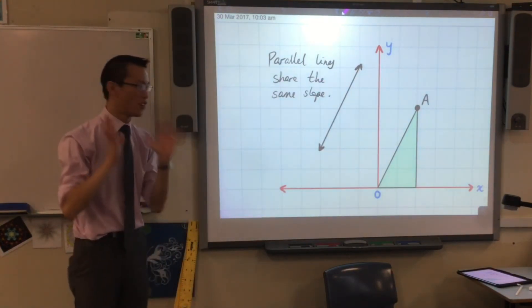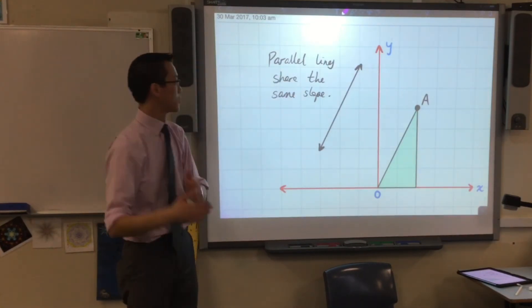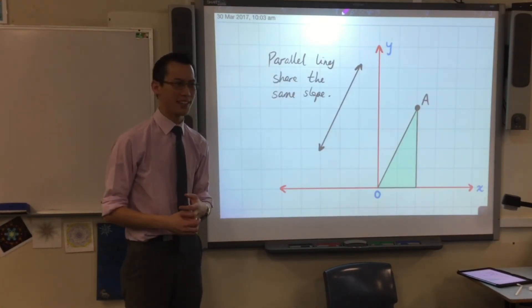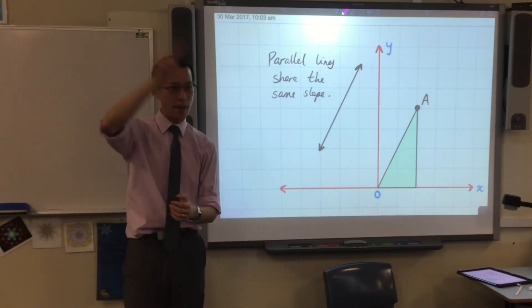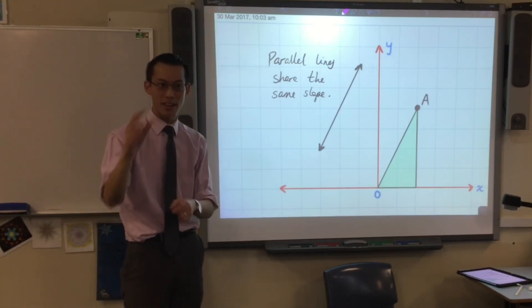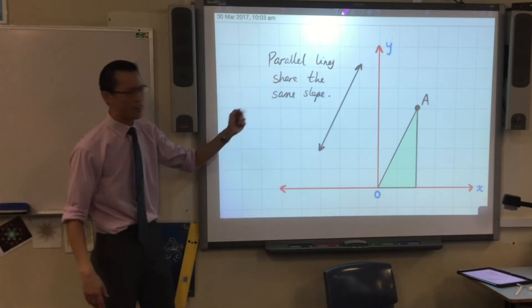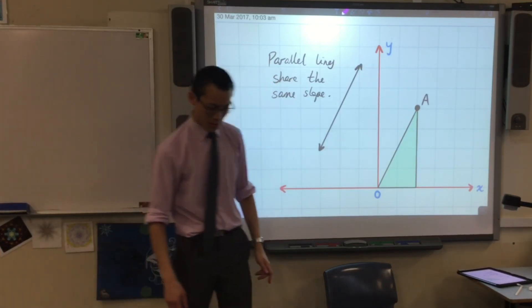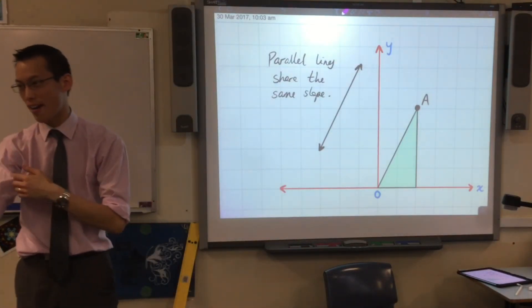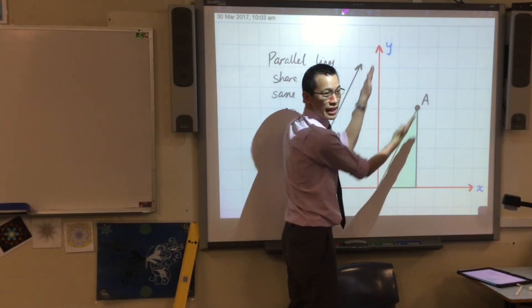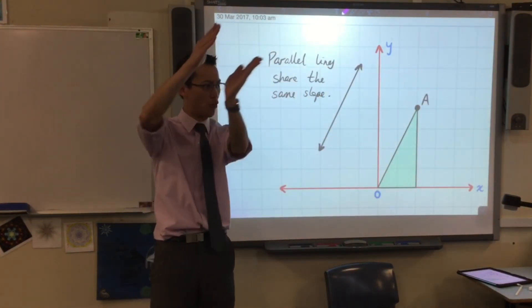By the way, the word para, it means alongside. So paranormal activity, it's like, it's not quite normal. It's sort of a bit over here. Parabolas, you know those shapes? It means throwing something aside, which is the shape you get when you throw something away. The word itself, parallel, means it's going alongside. You see? It's not just that they never meet. It's also that they stay together, almost, as it were.